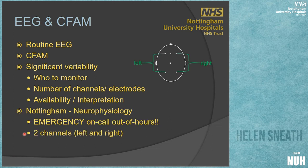In Nottingham we do this as an emergency on-call out of hours. The two channels are just from the left and right side of the head. If you look at this diagram - a picture of the head from above with the nose at the front and ears either side - these dots are where we've got our electrodes placed. We're recording a wide-spaced montage on the left and wide-spaced on the right. It's a simplified version of an EEG.